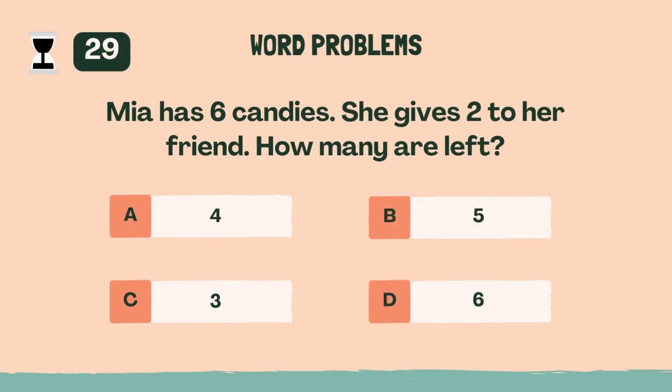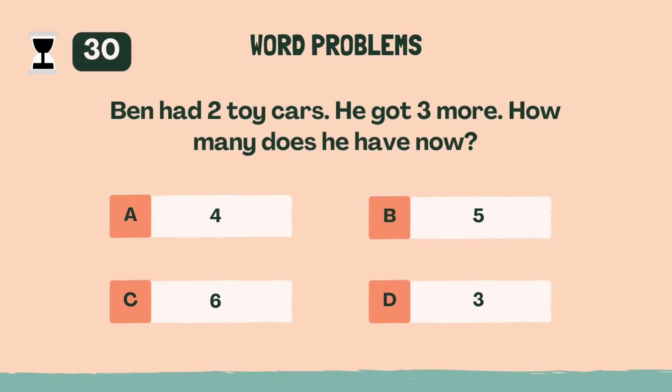Mia has six candies. She gives two to her friend. How many are left? A, four. Ben had two toy cars. He got three more. How many does he have now? B, five.